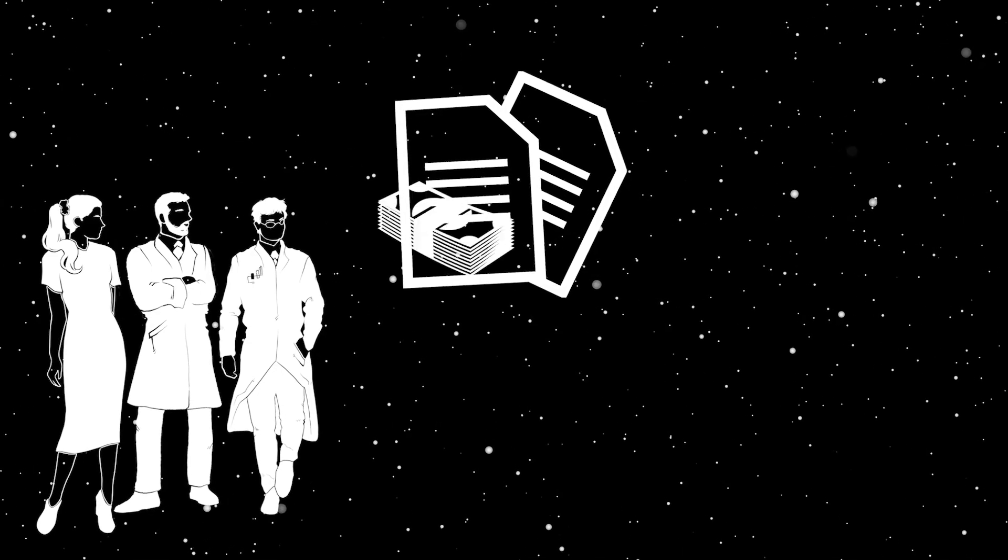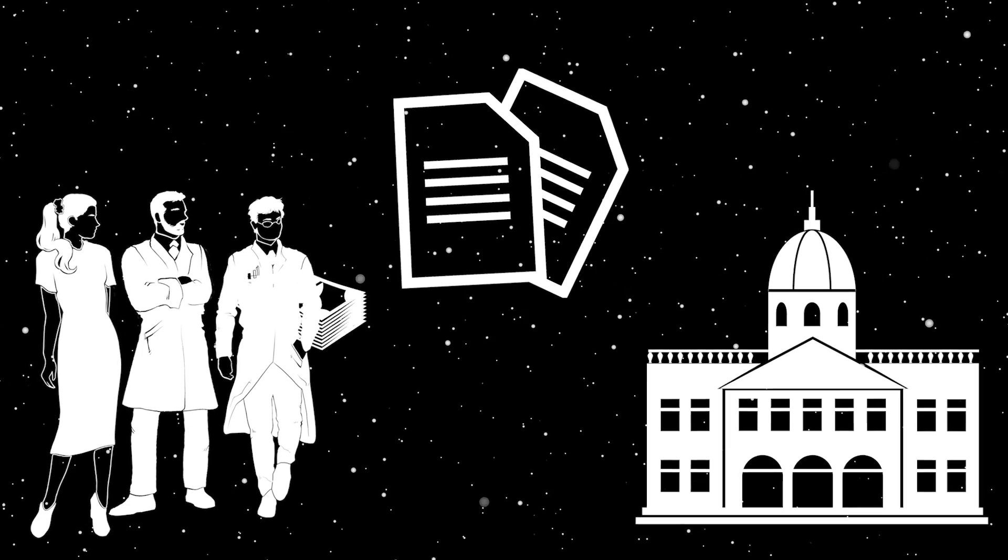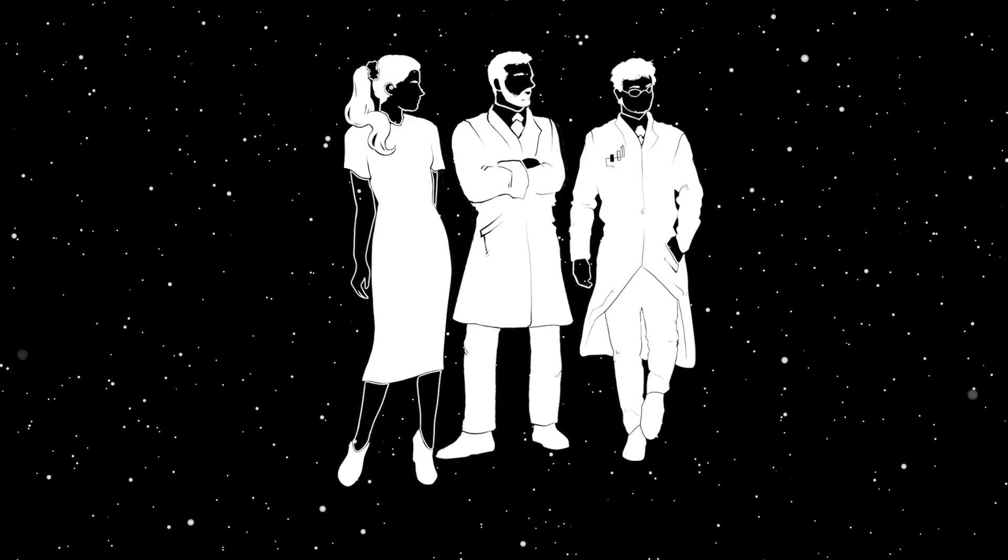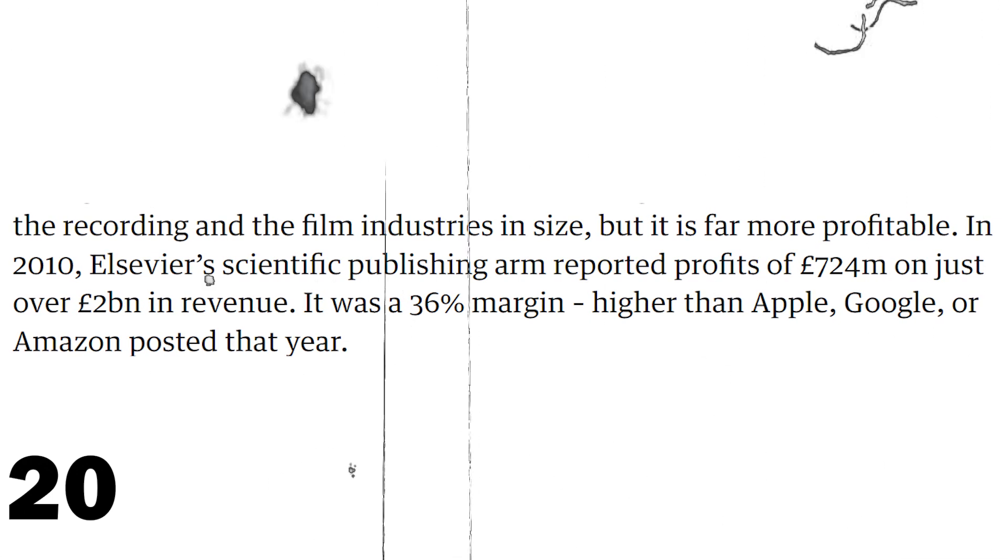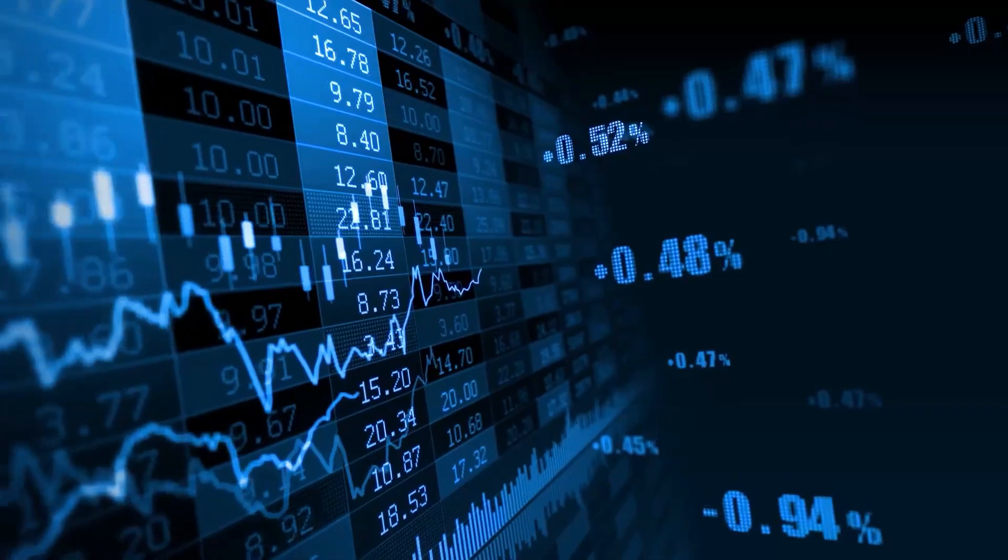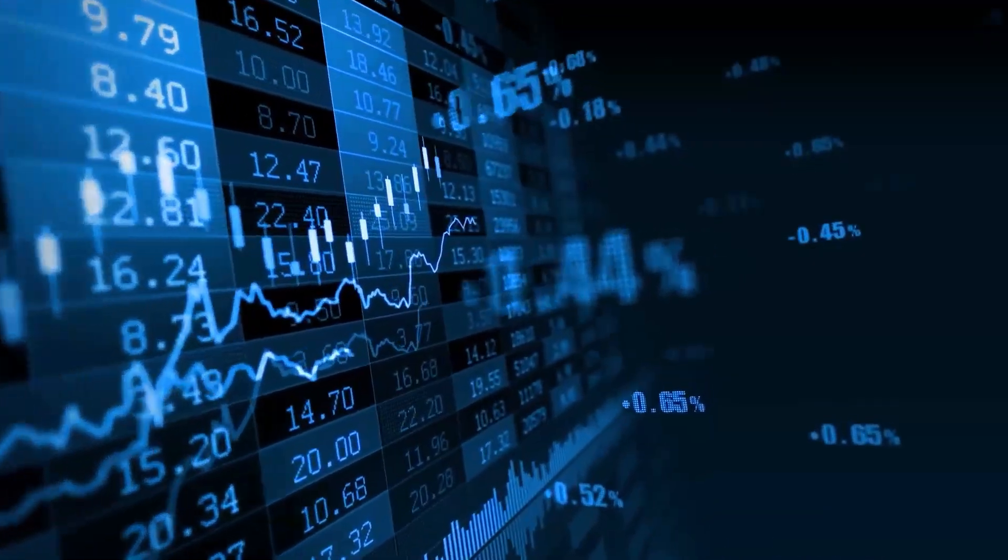Scientists pay publishers for their work to get printed, and universities pay to read the same articles. Scientists also review scientific works for free. As a result, the biggest publishing houses have a profit margin higher than Apple, Google, or Amazon, translating to billions and billions of dollars a year.